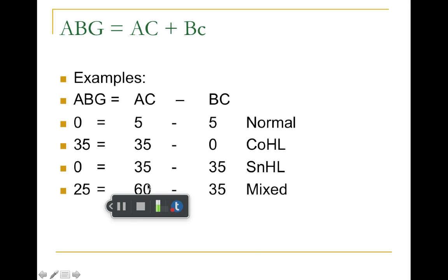Example four: air conduction threshold is 60 dB — abnormal — and bone conduction threshold is 35 dB — also abnormal, because it's worse than 20 dB. Bone is encountering one problem, and air is encountering two problems. The air-bone gap is 25 dB, which is greater than 10 dB. This is a mixed hearing loss.